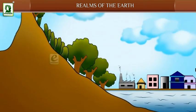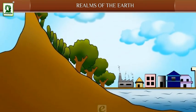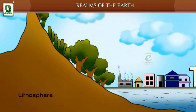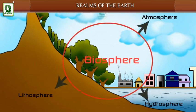Four realms of the earth, also known as four spheres of life, are: Lithosphere, which provides the surface of the earth and the ocean floors; Hydrosphere, which provides water in all forms; Atmosphere, which provides air; and Biosphere, which supports life and allows life to flourish.